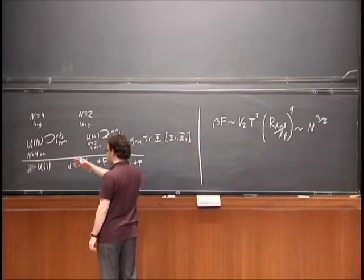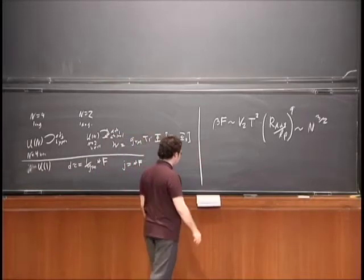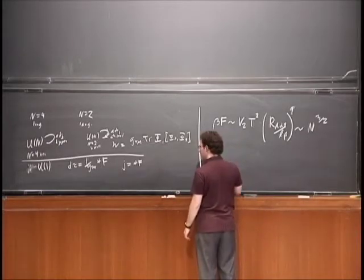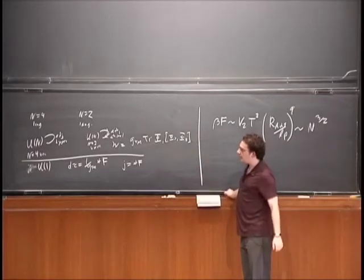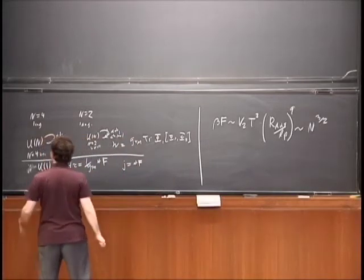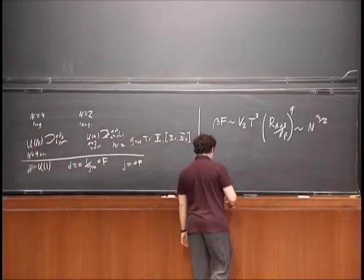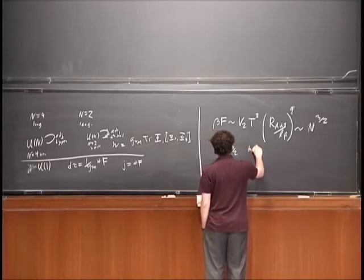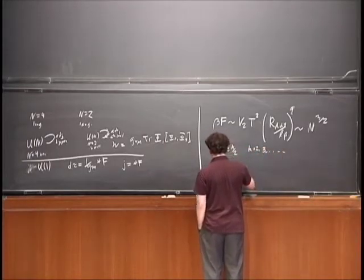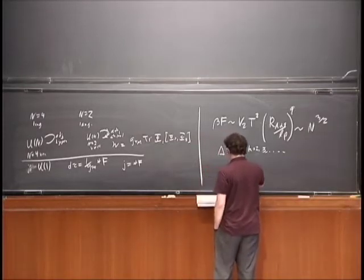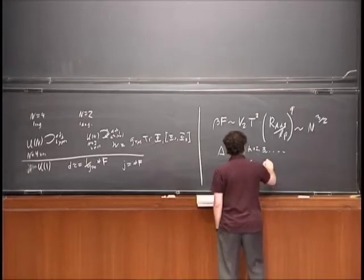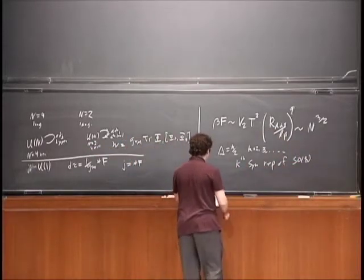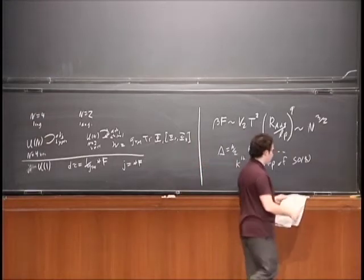The N^(3/2) scaling is somewhere between a gauge theory with N^2 degrees of freedom and just N free particles. You can also analyze the spectrum of Kaluza-Klein modes and fluctuations — harmonics on the seventh sphere. These give operators with dimensions delta = K/2, for K = 2, 3, and so on, in the completely symmetric representation — the K-symmetric representation of the SO(8) isometry of S7.